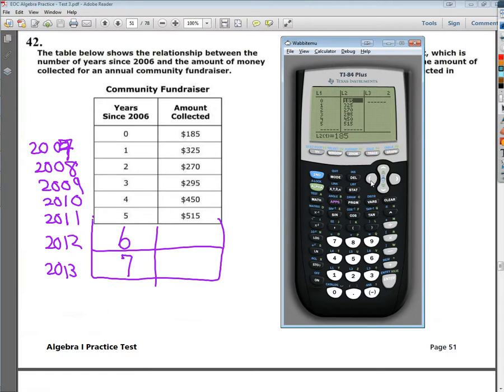My L1 would be my year since 2006, or my input value, my X, my independent variable, that whole thing. On the other side, I'm going to put my amount collected in my L2. And by the way, how pathetic of your community. Come on, folks. $185 for the whole community in a year? That's just sad.